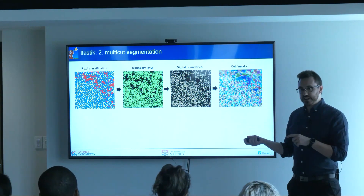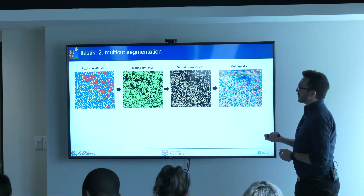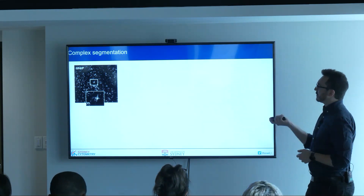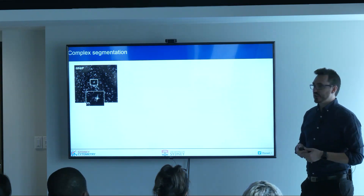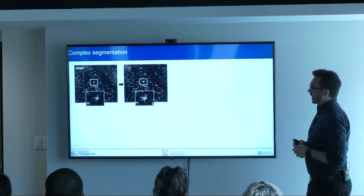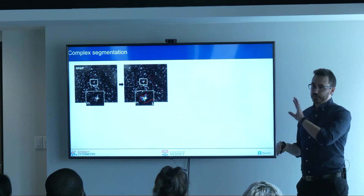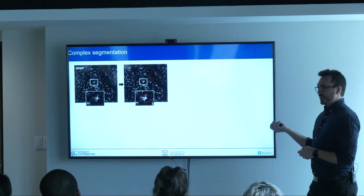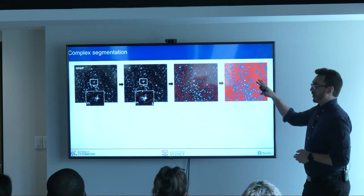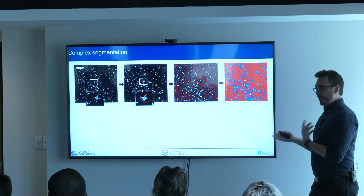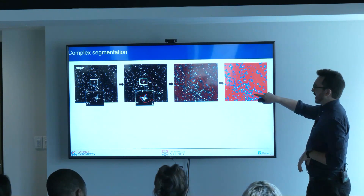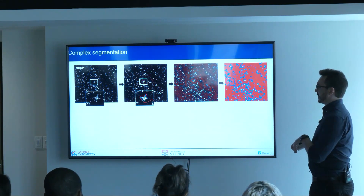An example using spleen data doesn't look terribly different to any other segmentation approach. But if we take mouse brain data, we have much better examples of why this is helpful. Here we have astrocytes expressing GFAP — complex, weird-looking cells with no nucleus in this cut. All we're doing in blue is identifying the edge of that cell. They can be non-uniform, weird shapes, with or without a nucleus, because we're just training it to see the edge of each cell.